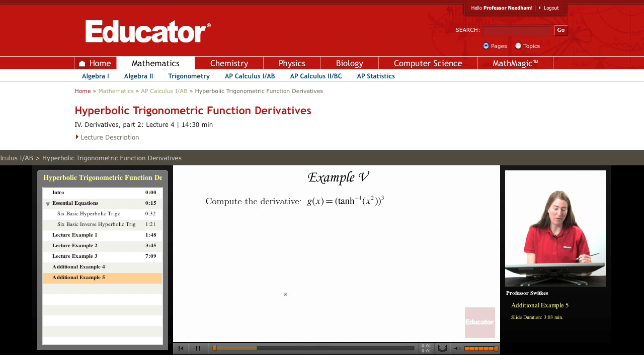One final example. This again is a composition of three functions, so we have an outer function j of u equals u cubed, we have sort of a middle function g of v equals inverse hyperbolic tangent of v, and we have an inner function I'll call f of x equals x squared.